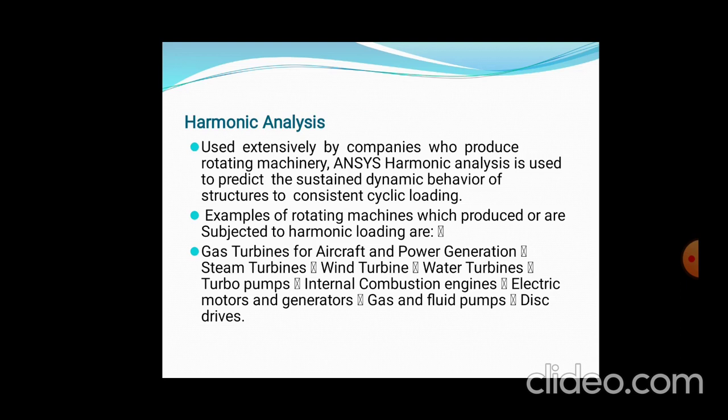Examples of rotating machines which produce harmonic loading include gas turbines for aircraft, power generation steam turbines, wind turbines, water turbines, turbo pumps, internal combustion engines, electric motors, generators, and gas and fuel forms. These are examples where harmonic analysis is applied to shock absorbers.